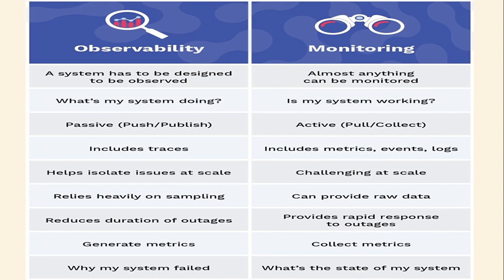Observability creates the potential to monitor different events, whereas monitoring is the process of using observability. Observability is a system that has to be designed to be observed for monitoring — almost anything can be monitored. Monitoring tells you whether your system is working or not, and observability tells you what your system is doing and why. Observability is passive — push and publish methods are applicable. Monitoring is active — pull and collect methods are used. Observability includes traces, while monitoring includes metrics, events, and logs. Monitoring is challenged at scale, whereas observability helps to isolate issues at scale.